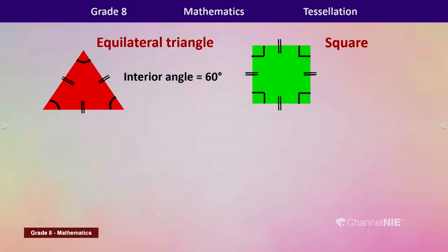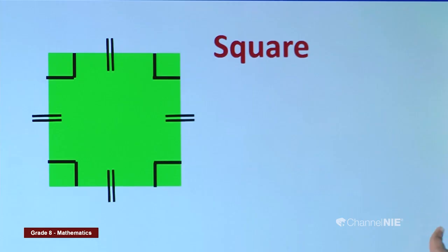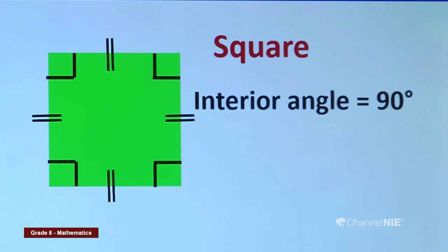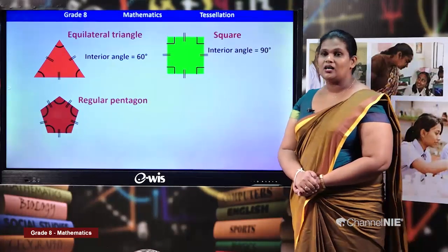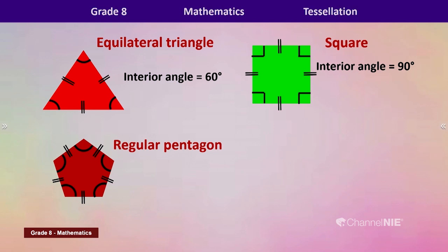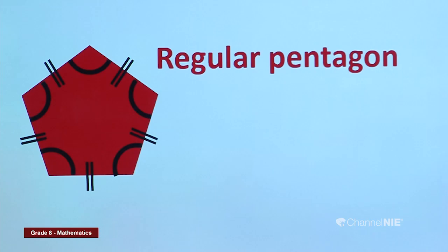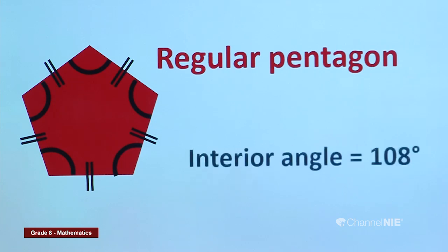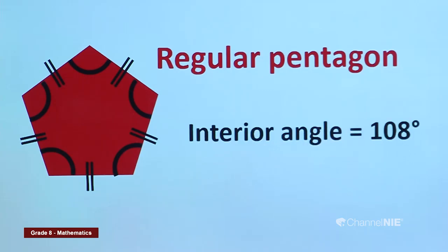Here we can see a square — four equal sides and all four angles equal in magnitude, so the magnitude of an interior angle is 90 degrees. Next, a pentagon with all five sides equal is called a regular pentagon. All five interior angles are also equal, and the magnitude of an interior angle is 108 degrees.